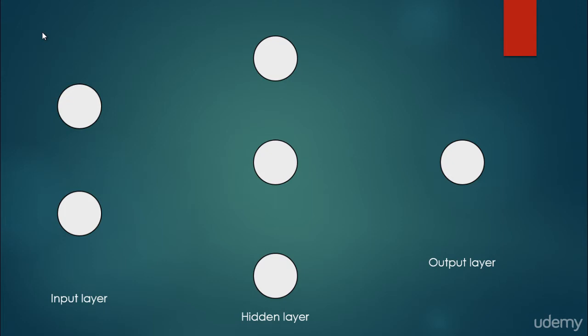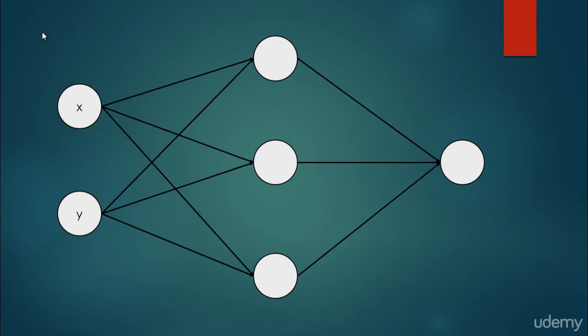Because it's a feed-forward neural network, we are going to connect the neurons or nodes with directed edges. Here we have an input X and an input Y, and a single output neuron. But we can have as many input neurons, as many hidden neurons, and as many output neurons as we want.